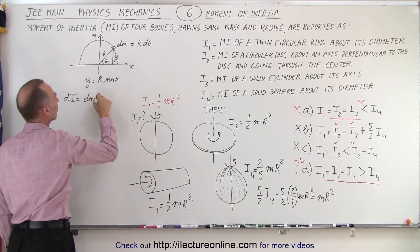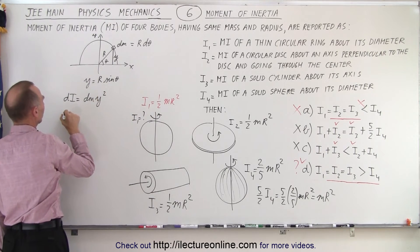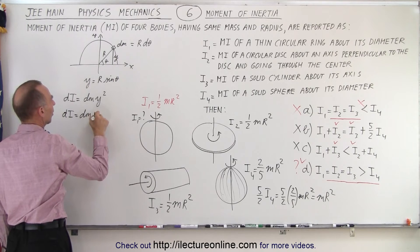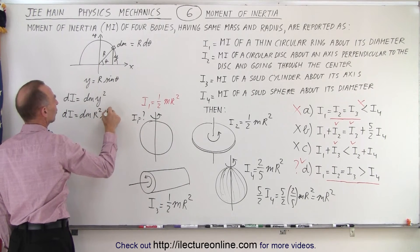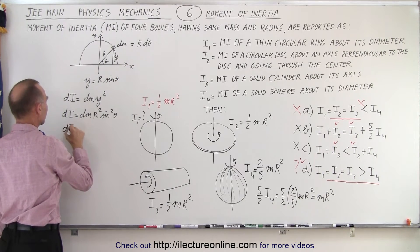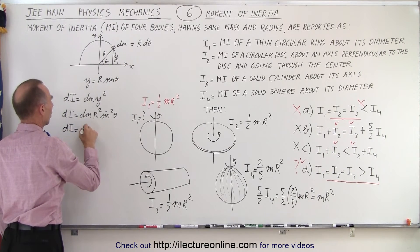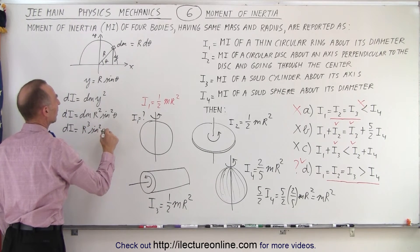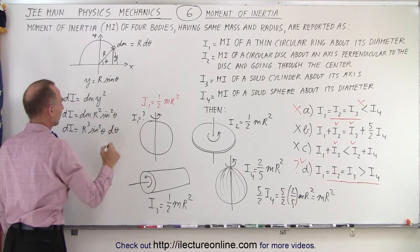In other words, di is equal to dm times r squared sine square of theta. And since dm is equal to r d theta, I can say that di is equal to r cubed sine square of theta times d theta.